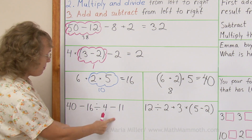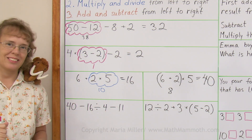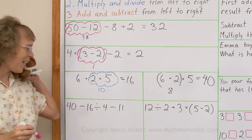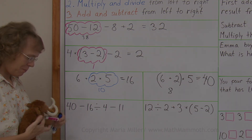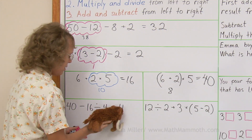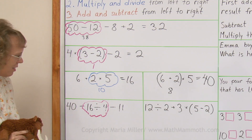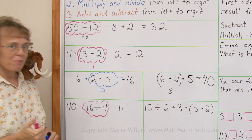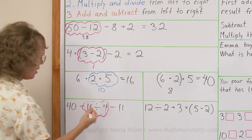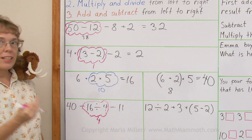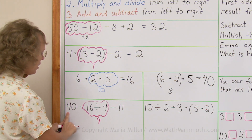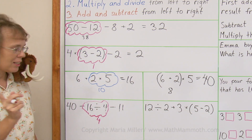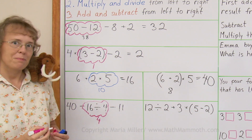Next one over here — what do we do first? Matty is excited, he wants to do the bubble. Matty found it: division first. We get 4 here, and then 2 subtractions, so we go from left to right. 40 minus 4 is 36, minus 11 is 25.